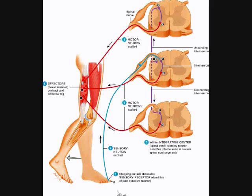Let's follow the reflex arc. As the foot steps on the tack, it's going to stimulate the sensory receptors, generating a nerve impulse in a sensory neuron that will travel into the spinal nerve, in the dorsal root, in the dorsal horn of gray matter, and branch and synapse twice.